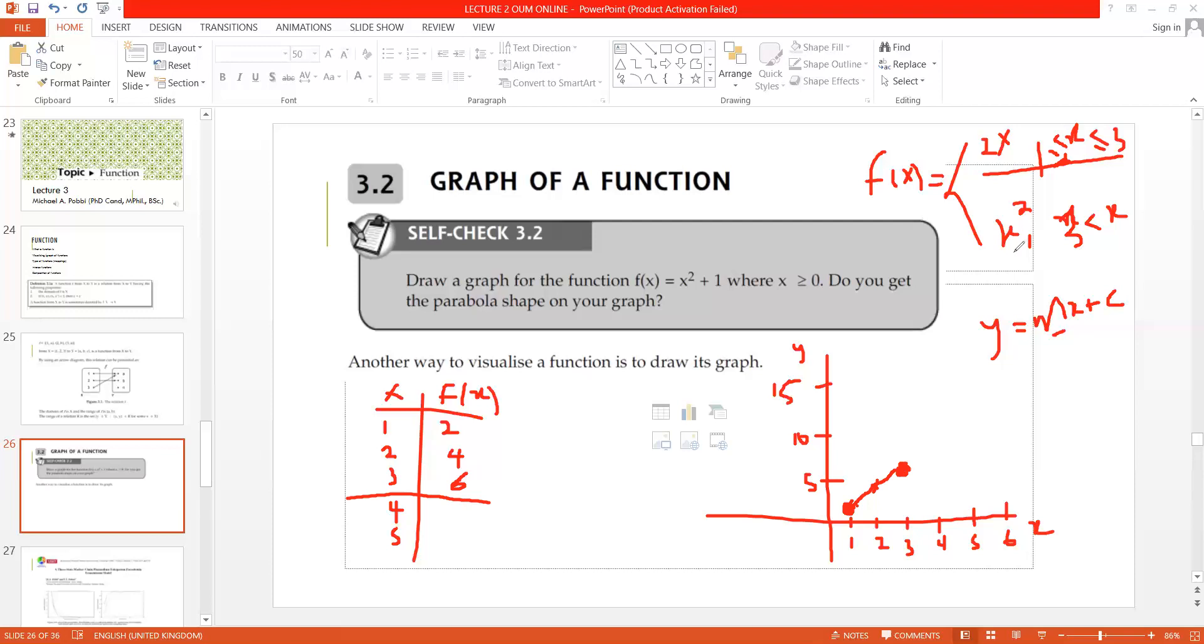Then for the next set, where x is greater than 3, we've taken the point 4, 5. When x is 4, it's going to be 4 squared. The function is 4 squared, which is 16. And then for 5, it's going to be 5 squared, which is 25. So we'll have to extend our axes toward 20 and toward 25.